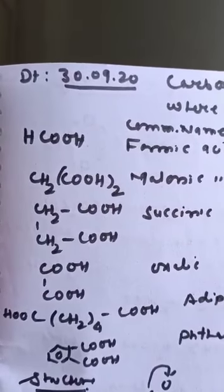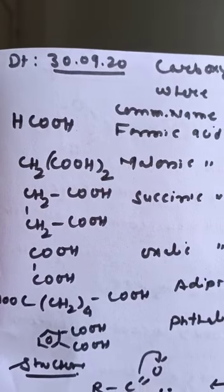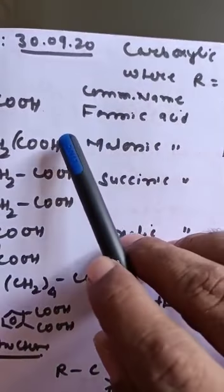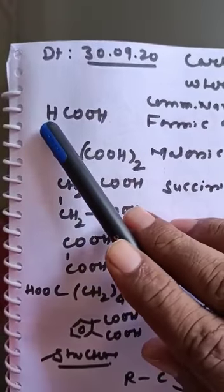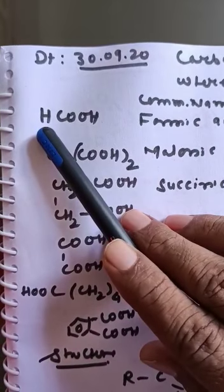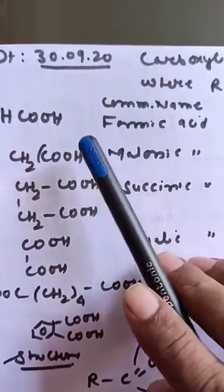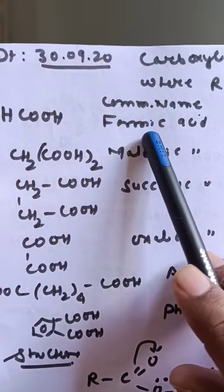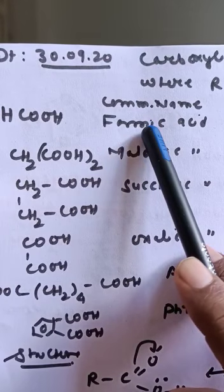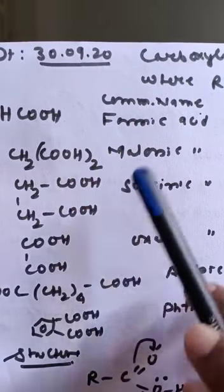For common name, there is no rule for common name, only the origination of a source. For example, we put in place of R H. The compound is HCOOH. The common name of this compound is formic acid, which is derived from the red ant. The Greek words for red ant is formicus. So, this acid name is formic acid.